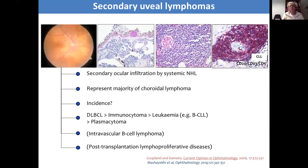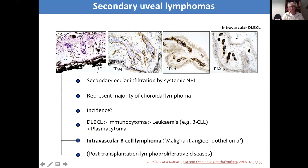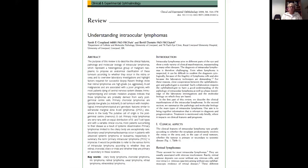There are secondary uveal lymphomas which occur in patients who have a systemic non-Hodgkin lymphoma and then, as a late manifestation, the disease occurs typically within the choroid. This is an example of a CLL — chronic lymphocytic leukaemia occurring within the choroid — and an example of an exceptionally rare case of intravascular B-cell lymphoma seen extensively within the choroid and also within the anterior uveal structures. To summarise: the most common is vitreoretinal lymphoma, followed by primary choroidal lymphomas, secondary choroidal lymphomas, and then exceptionally rare varieties such as iris lymphomas.